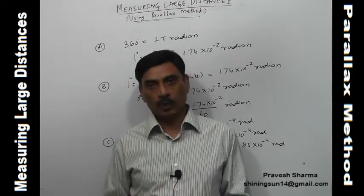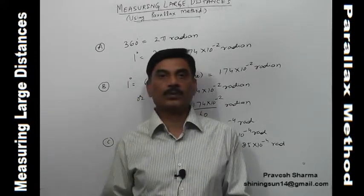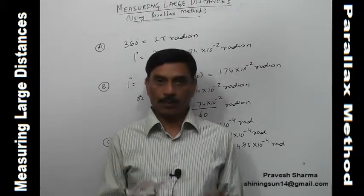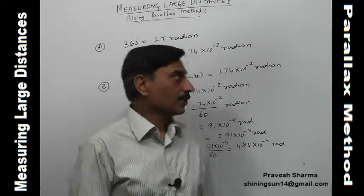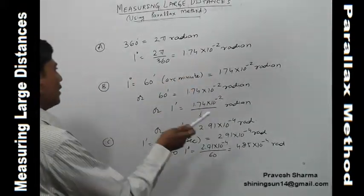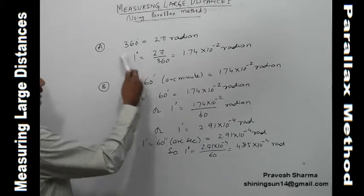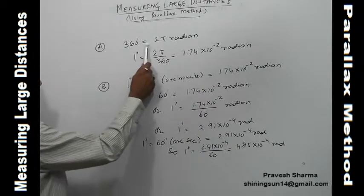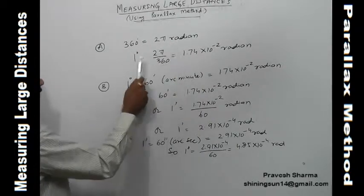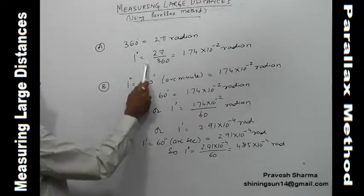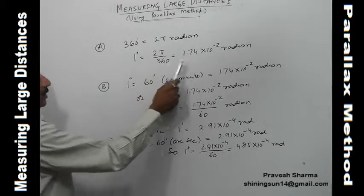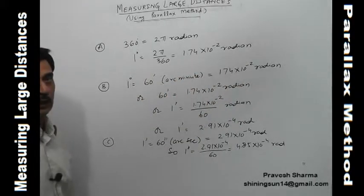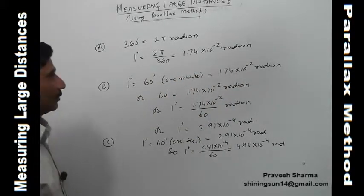We know 2π radians equals 360 degrees. So 1 degree equals 2π/360 radians, which equals 1.74 × 10⁻² radians.